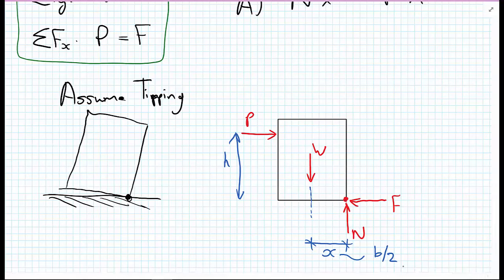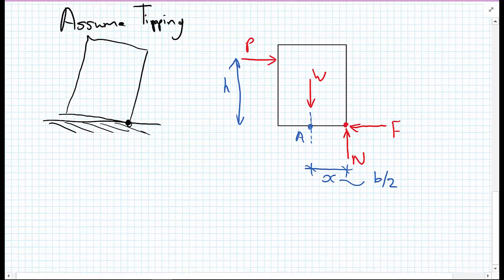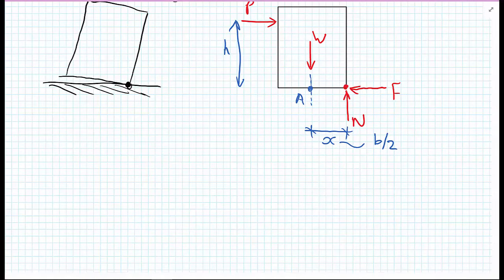Let's label this point as A again. W is going straight through A, F is going straight through A, so neither of those components have any lever arm if we take moments about this point. But N has the lever arm of B upon 2, and P has the lever arm of H. So let's write that down as an equation of equilibrium.